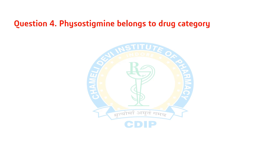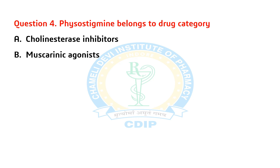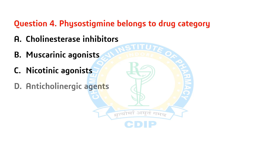Question 4. Physostigmine belongs to which drug category? A) Cholinesterase inhibitors. B) Muscarinic agonist. C) Nicotinic agonist. D) Anticholinergic agent. Answer: A. Cholinesterase inhibitors.